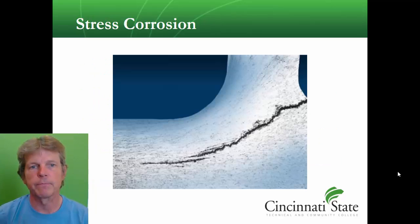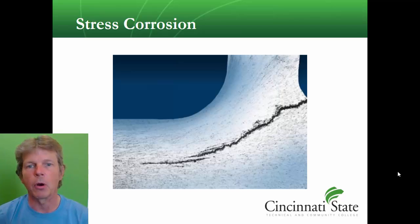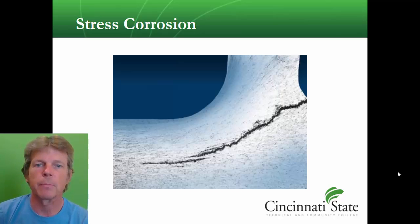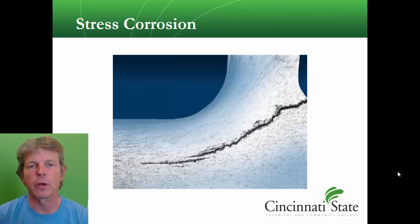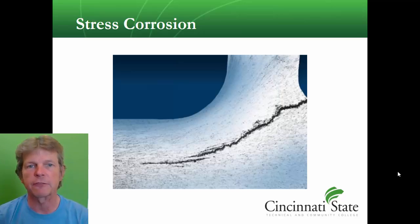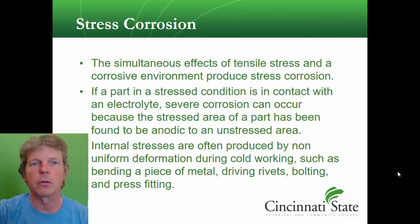Stress corrosion happens somewhere there's a lot of load on a part — where there's a lot of stress. Something like a fitting or a wing skin that is a stress skin, carrying a lot of load and flexing. You'll get corrosion in these areas, and part of the working back and forth of the metal causes the stress corrosion.